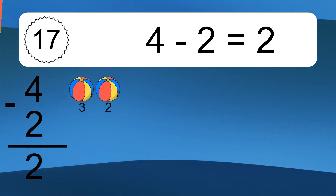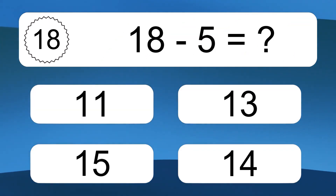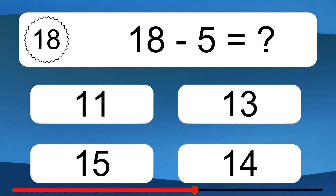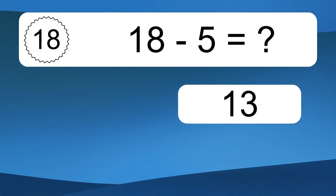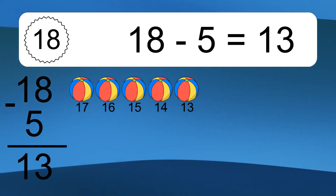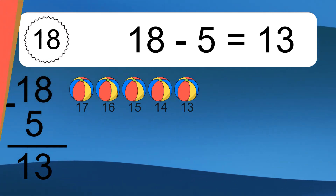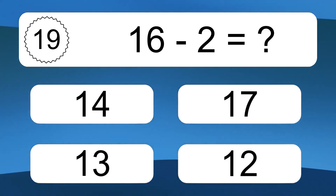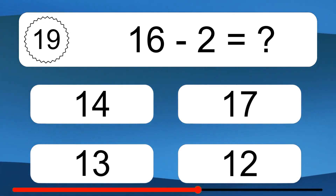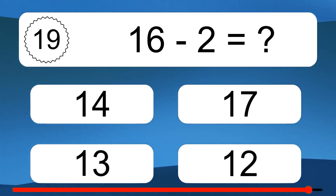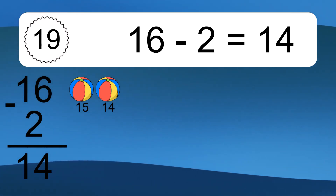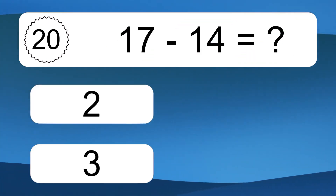4 minus 2 equals what? Let's count it. 3, 2. 18 minus 5 equals what? Let's count it. 17, 16, 15, 14, 13. 16 minus 2 equals what? Let's count it. 15, 14.